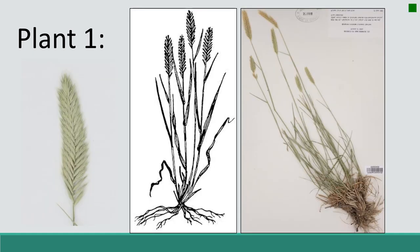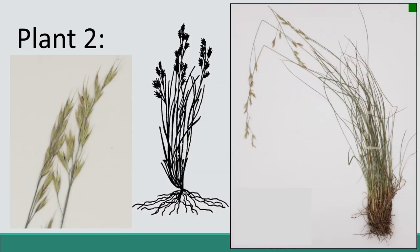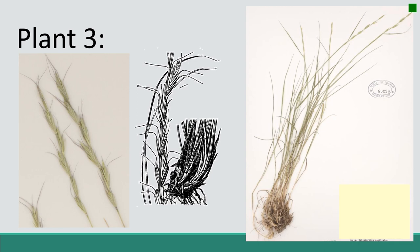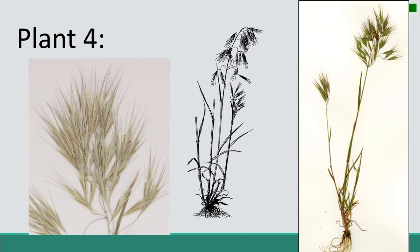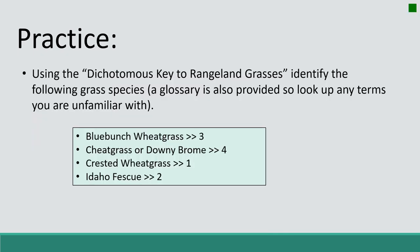Here's plant one — take a minute to look at the dichotomous key for rangeland grasses and see if you can identify it. Here's plant two — pause the video and go through the key to identify plant two. Then plant three, and plant four. How did you do? Hopefully you were able to identify some of the grasses, or at least these four grasses, using that dichotomous key. The answers are below showing which species were associated with each plant number.